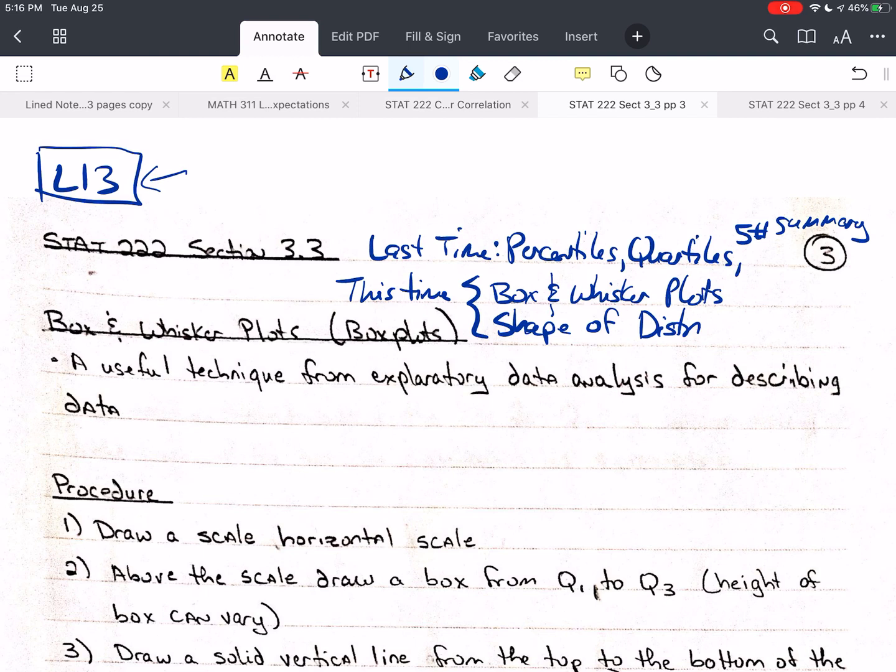So a box and whisker plot, or box plot as most people say it, is a very useful technique for exploratory data analysis that's used for describing the data and the shape of the data.